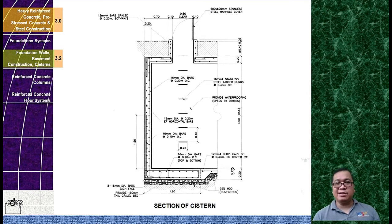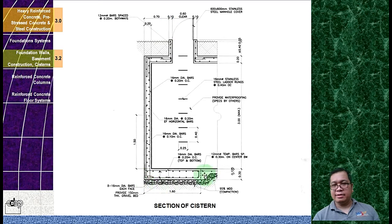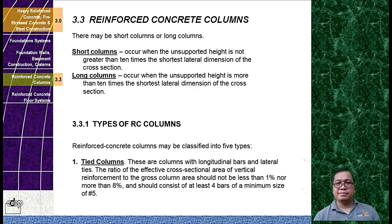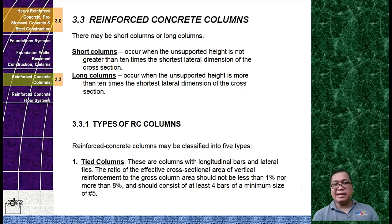This is the section of a cistern. Cistern tanks are usually reinforced concrete with no masonry units. Now let's discuss about reinforced concrete columns. There may be short or long columns. Short columns occur when the unsupported height is not greater than 10 times the shortest lateral dimension of the cross-section. Long columns occur when the unsupported height is more than 10 times the shortest lateral dimension of the cross-section.